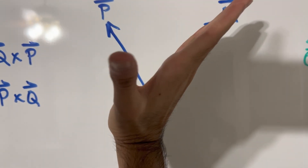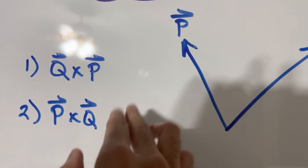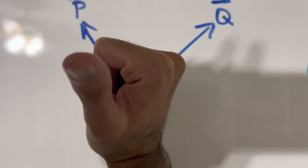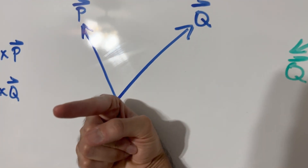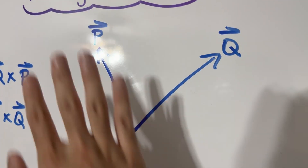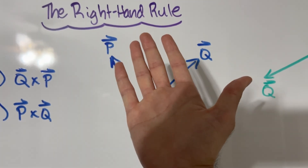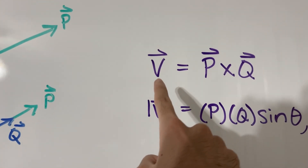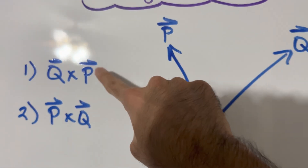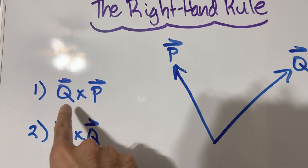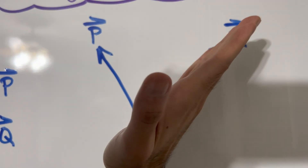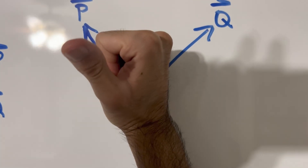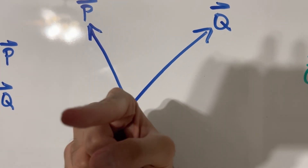The right-hand rule is a quick visual way of understanding which direction the vector product V is oriented. For case one, Q cross P: take your four fingers, line them up with Q, and curl in the direction of theta into P. My thumb is sticking out of the whiteboard into the camera, so the vector product points this way.